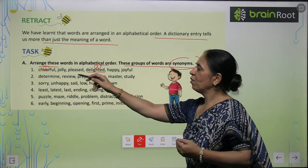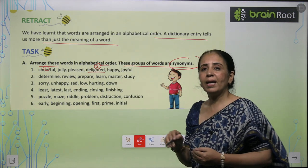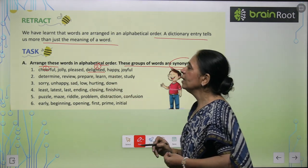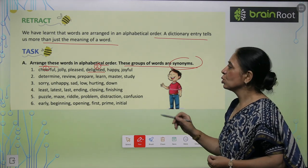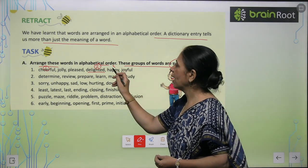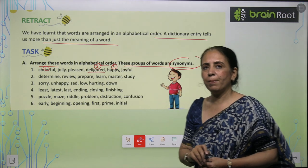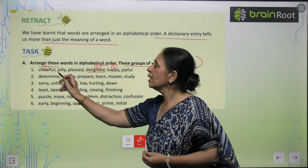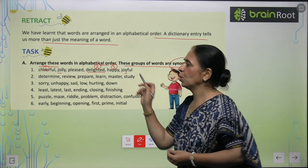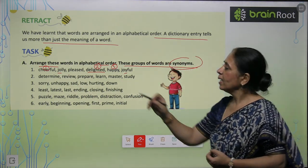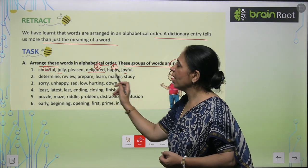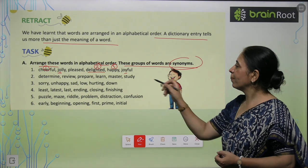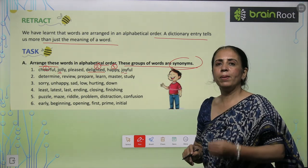After that, E doesn't have any word. F doesn't have any word. G — no word is there from G. Then we have H, so we take happy as the third number. After that, I — no word. J — now let's look at it. There are two words that start with J: jolly, J, and joyful, J.